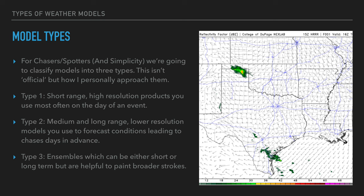For chasing purposes, we'll simplify into three types. Type one: short-range high-resolution models, used on the day of an event where you can see individual storms. Type two: medium and long-range models, lower resolution, used to forecast days in advance — for example, knowing you'll probably be chasing in Kansas or Oklahoma next week. Type three: ensembles, either short or long term, used as a supplement to paint broader strokes and show probabilities.